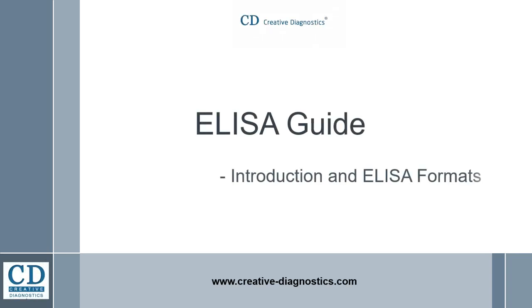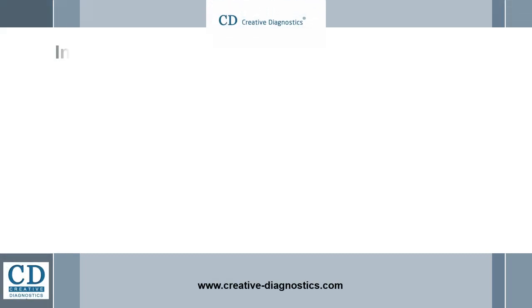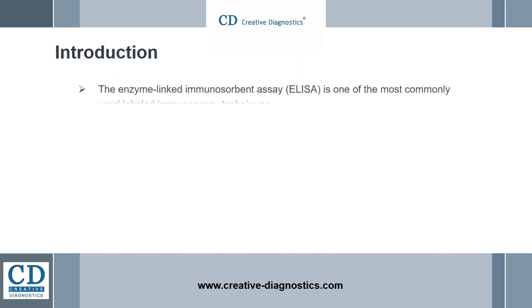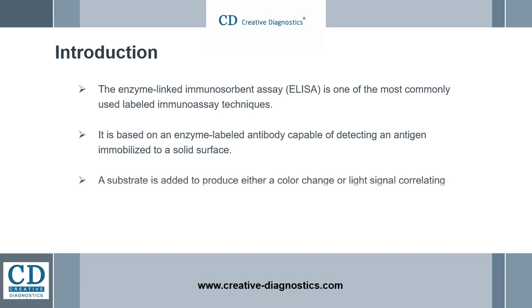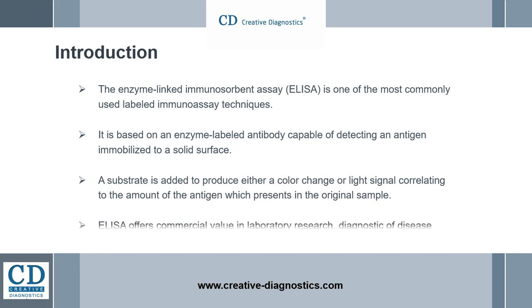ELISA Guide from Creative Diagnostics. The enzyme-linked immunosorbent assay is one of the most commonly used labeled immunoassay techniques. It is based on an enzyme-labeled antibody capable of detecting an antigen immobilized to a solid surface — 96-well or 384-well polystyrene plates. A substrate is added to produce either a color change or light signal correlating to the amount of the antigen which is present in the original sample.